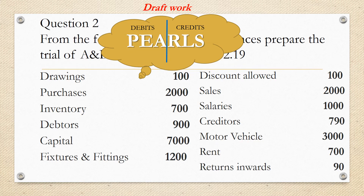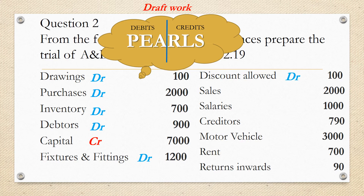Drawings, as I mentioned earlier, have a debit balance. Purchases, inventory and debtors also have debit balances. Capital has a credit balance. Fixtures and fittings and discount allowed have debit balances. Sales have a credit balance. Salaries have a debit balance. Creditors have a credit balance. Motor vehicle, rent and returns inwards have debit balances.